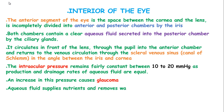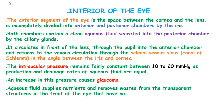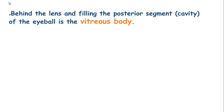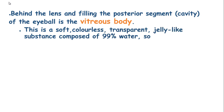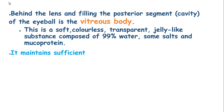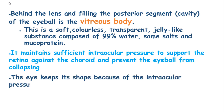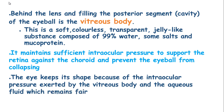Aqueous fluid supplies nutrients and removes waste from the transparent structures in the front of the eye which have no blood supply, such as the cornea, lens, and lens capsule. Behind the lens and filling the posterior segment cavity is the vitreous body. This is a soft, colourless, transparent, jelly-like substance composed of 99% water, some salts, and mucoprotein. It mainly maintains sufficient intraocular pressure to support the retina against the choroid and prevent the eyeball from collapsing.